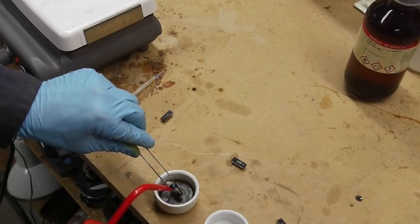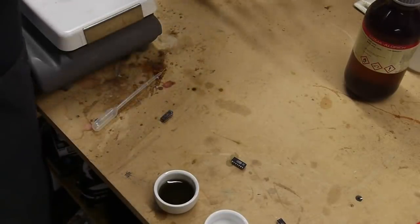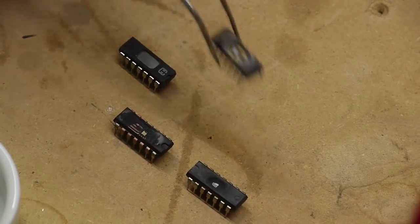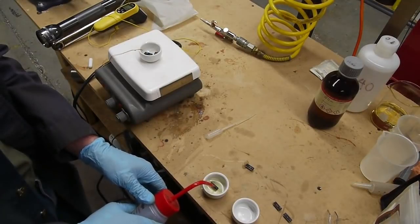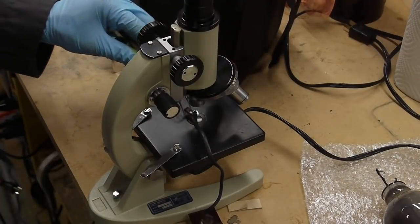And then I'd use the acetone wash bottle to kind of blow out as much dissolved epoxy that I could. After a few iterations I could see that the die and most of the bond wires were exposed. So I took it out and soaked it in some clean acetone and rinsed it again. And then put it under the microscope and had a look.